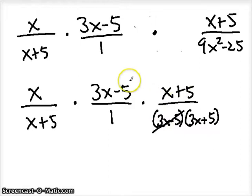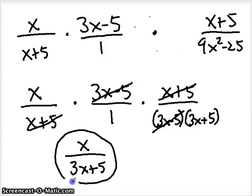Let's cancel our common factors here. 3x minus 5's, x plus 5's, and that's all we can do. Multiply now, straight across on top. All that's left is an x, and 3x plus 5 is all that's left on the bottom. So that's our final answer. Again remember we can't cancel these x's here, because we've got addition going on. We can only cancel them if we have multiplication.